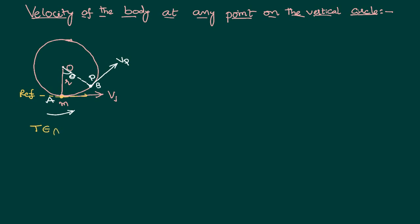Total energy at point A equals total energy at point B. Total energy at A is the sum of potential energy and kinetic energy at A. Since A is taken as the reference point, potential energy at A equals zero, and kinetic energy is half M V1 squared, where M is the mass of the body and V1 is the velocity at the bottom point.